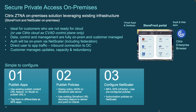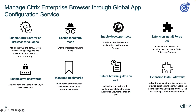Now that you know Citrix Enterprise Browser can enforce different security controls per web app directly on the user's end device, how is it managed? Our Global App Configuration Service allows complete browser management on managed and unmanaged Windows and Mac devices. For example, you can make Citrix Enterprise Browser your default work browser to access internal links directly without a VPN, allow or deny the use of developer tools, incognito mode, and save passwords, allow or deny browser extensions or force an extension installation, publish bookmarks to users, and delete browsing data on exit.